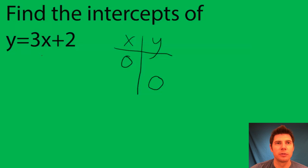So when I make x equal to 0, I get 3 times 0 plus 2 equals y. I get y equals 2. That is my y-intercept.